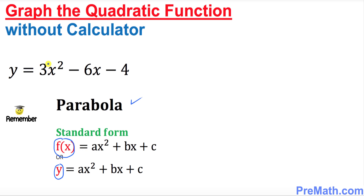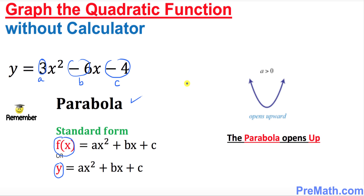In our case, a is going to be positive 3, b is going to be negative 6, and c is going to be negative 4. Our graph of this quadratic function is going to open up. The reason it opens up is because the leading coefficient a is positive, and that tells us the parabola opens upward.